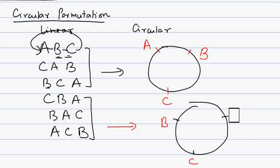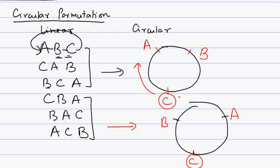Now, are these two circular permutations different from each other? Yes, they are different. If C is sitting at a position, in the first circular permutation A is on C's left and B is on C's right. In the second, B is on C's left and A is on C's right. Since the neighbors are different, these two arrangements are distinct.